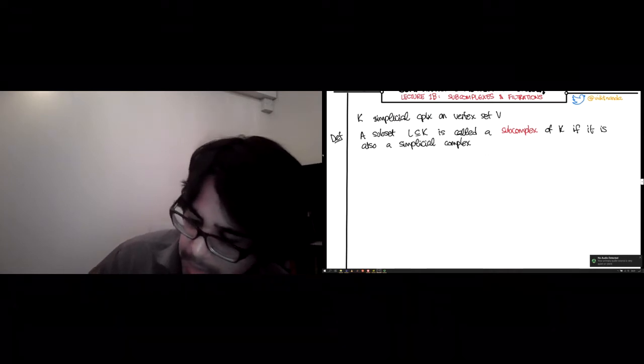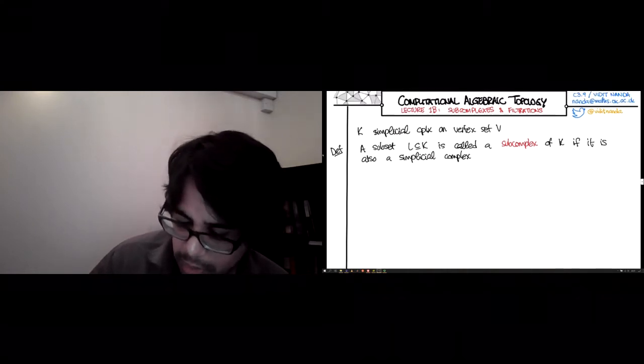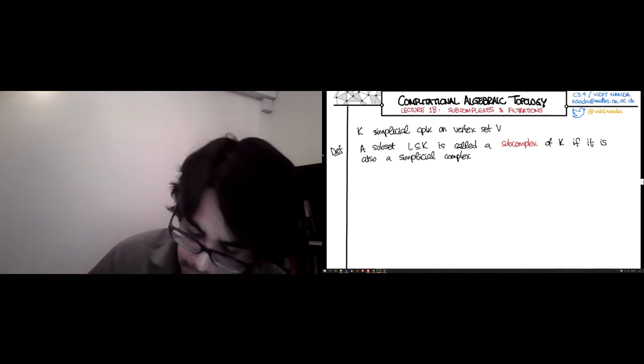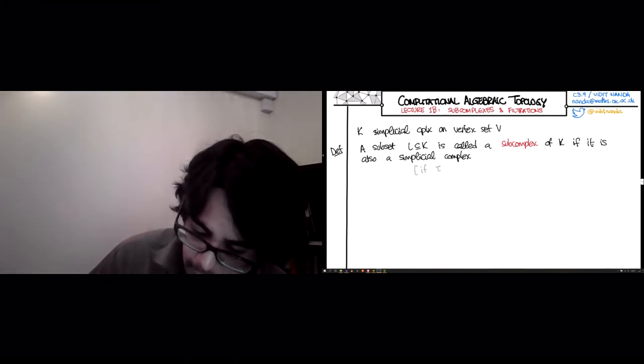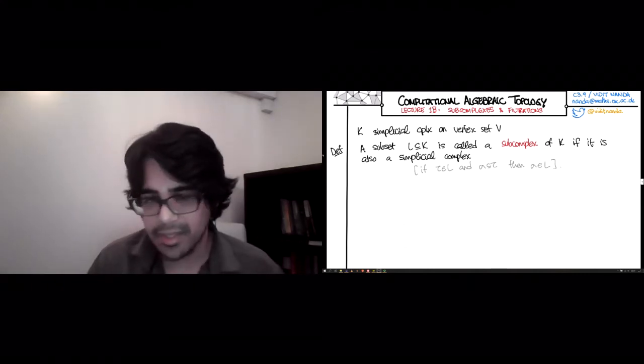Now, you have to be a bit careful. Let me say what I mean by simplicial complex. I mean that if tau is in L, and sigma is a subset of tau, then sigma must also be in L. Now, there's a bit of a subtlety here.